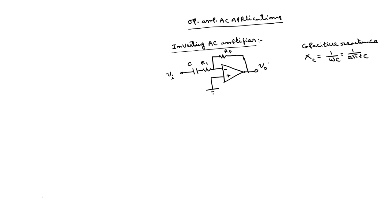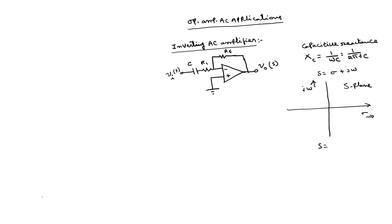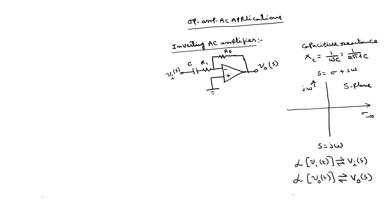In the S-domain, if you take S, V0 becomes V0(S) and Vi becomes Vi(S), where S equals σ + jω. For simplicity, we assume σ = 0 and substitute S = jω. Vi(S) is the Laplace transform of Vi(t), and V0(S) is the Laplace transform of V0(t). The gain as a function of S is defined as the output Laplace transform divided by the input Laplace transform.